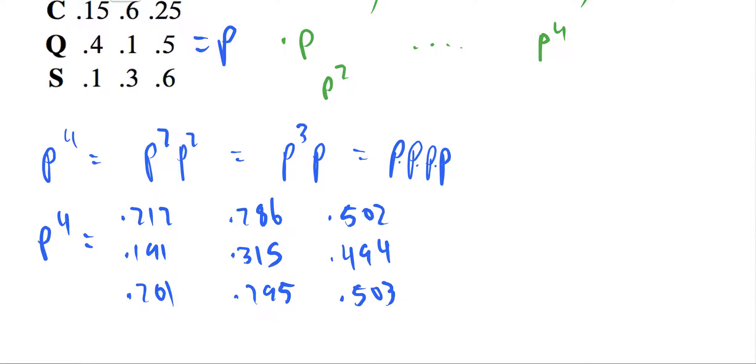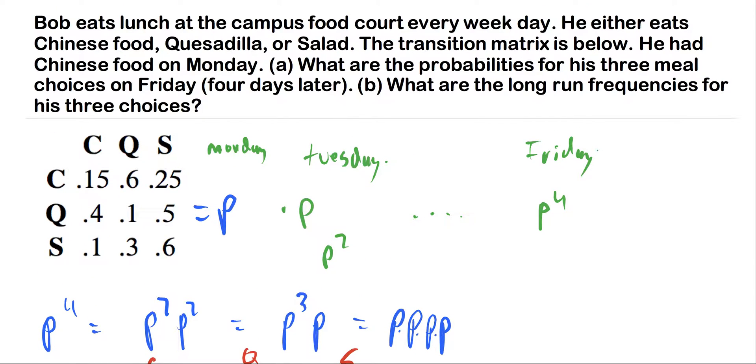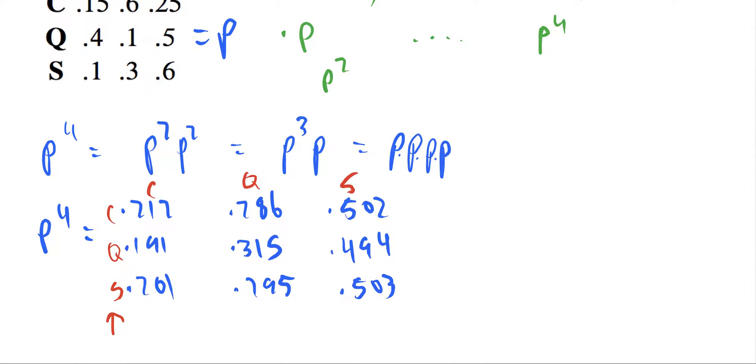And now, in red here, I will write C Q S. Now note, this is where we started on Monday. So the problem said that he ate Chinese food on Monday. So we're going to be looking at this row, this top row here to get our answers.